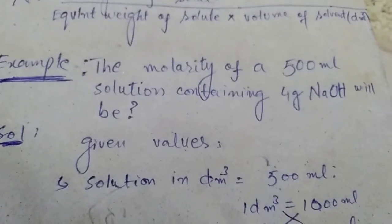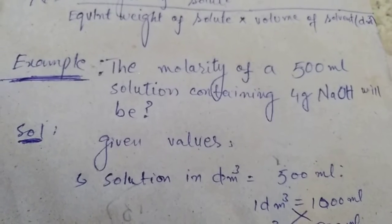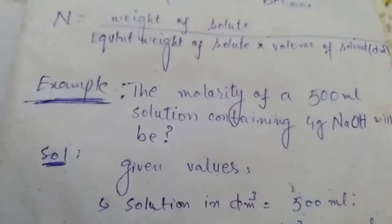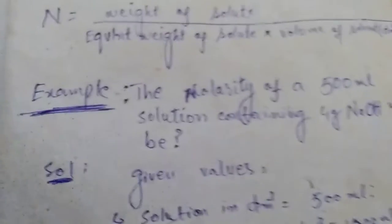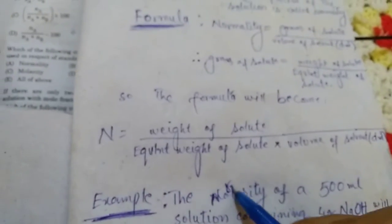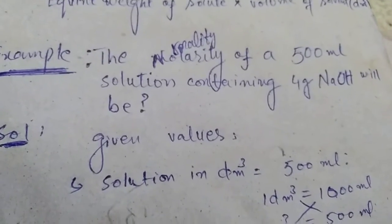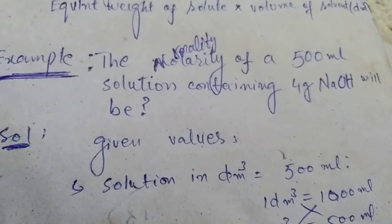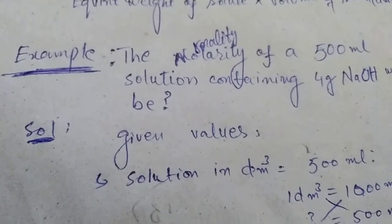Now we will follow an example which is very conceptual and very important about the normality. The question is: find the normality of 500 mL of a solution containing 4 grams of sodium hydroxide.